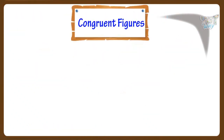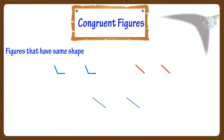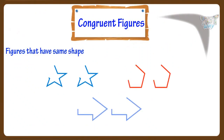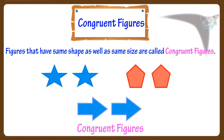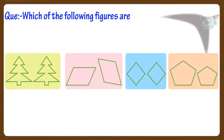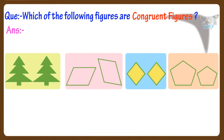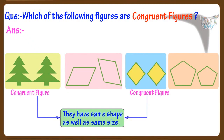Now let's learn what are congruent figures. Figures that have the same shape as well as the same size are called congruent figures. Let's figure out which of the following figures are congruent. These figures are congruent as they have the same shape as well as the same size.